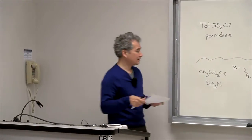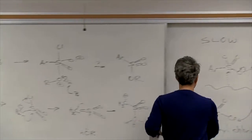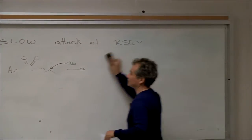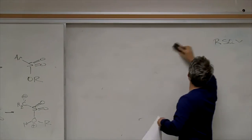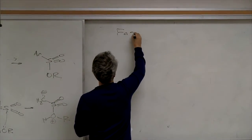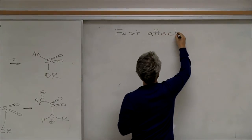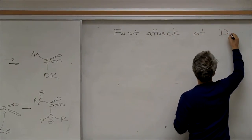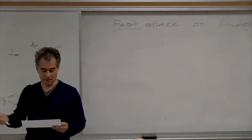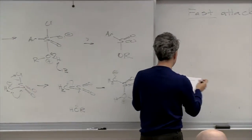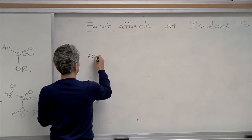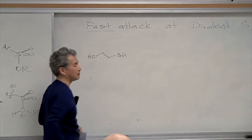Tosyl chloride does react well as a good electrophile. But I want to talk about really, really good electrophiles now and fast rates of substitution. This is one of the few cases of fast rates of SN2. I'm going to draw out a very common reagent called beta-mercaptoethanol — it's a thiol. It doesn't matter what the thiol is; this is just a common reagent in biology.